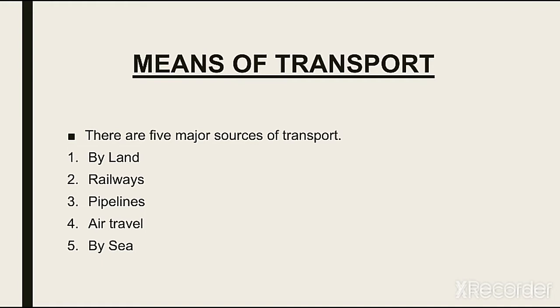Means of transport میں یعنی کہ خشک زمین کے ذریعے جو transport کی جاتی ہے، second railways ہے، trains کے ذریعے، pipelines کے ذریعے۔